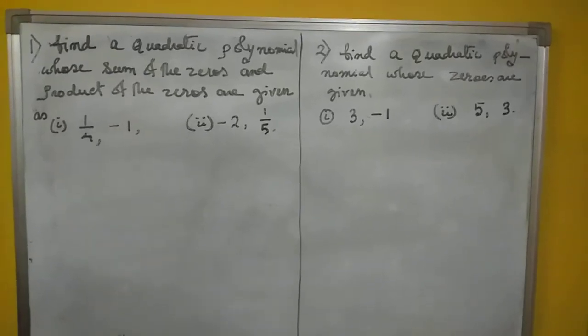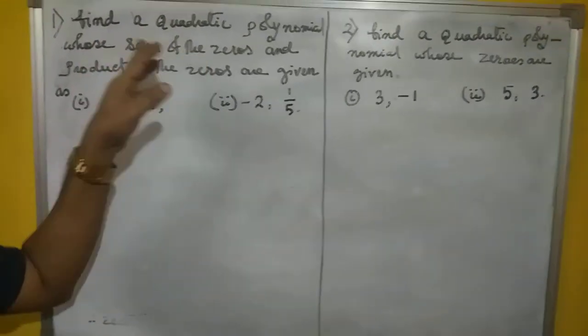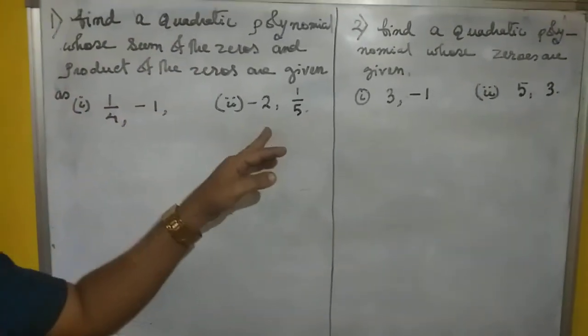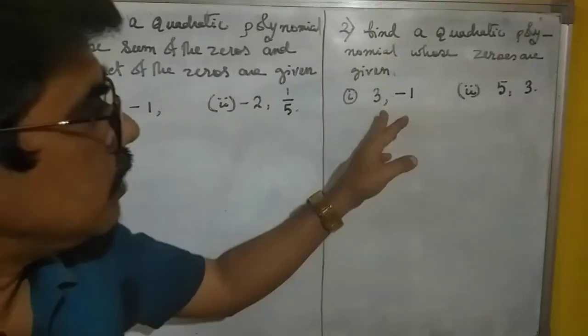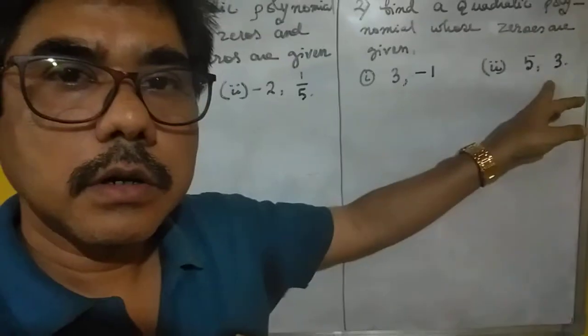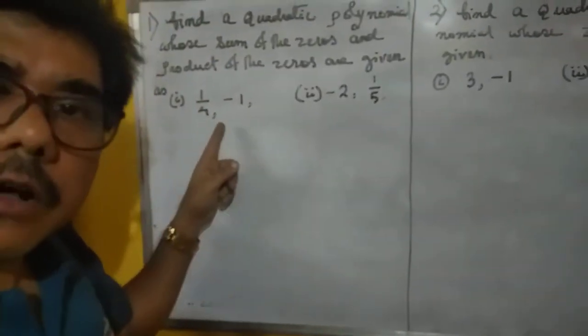I try to explain with two types of questions. One is that sum of the zeros and product of the zeros are already given. And another question, only zeros are given. Here the direct, ready made sum of the zeros and product of the zeros are given.